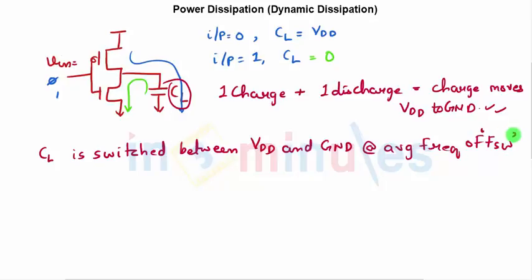We can also say the same thing in a different way. The number of times the charge - what was the charge? We know that load capacitance times V_DD was the charge correct. The number of times the charge which was equal to C_L V_DD is moved from V_DD to ground in one second was equal to F_S times.